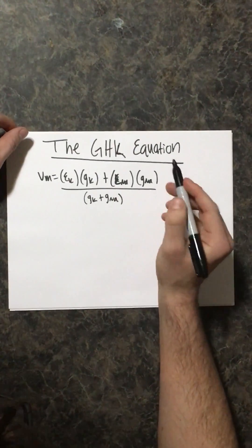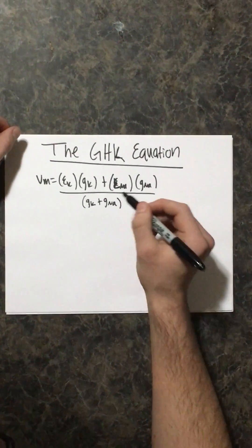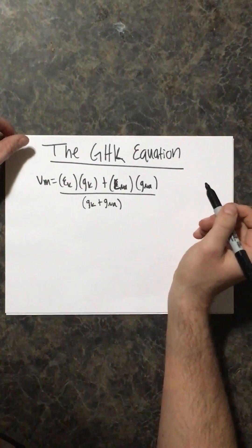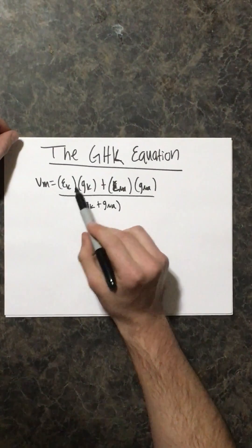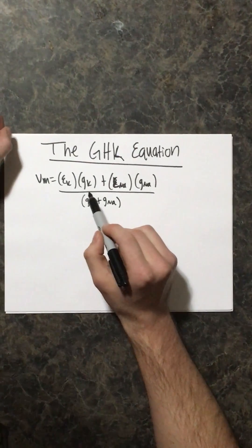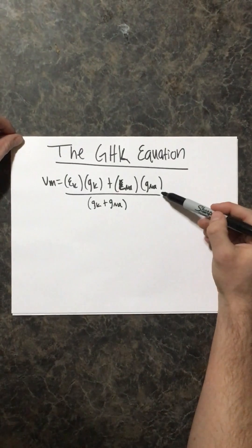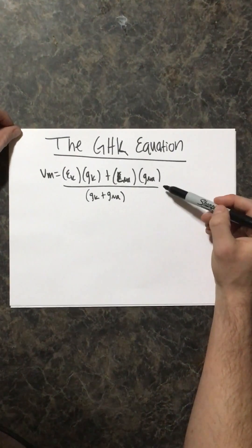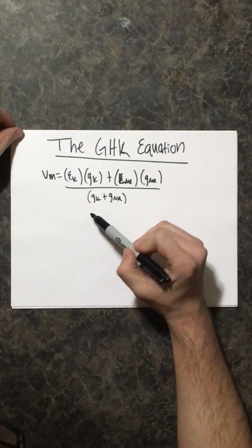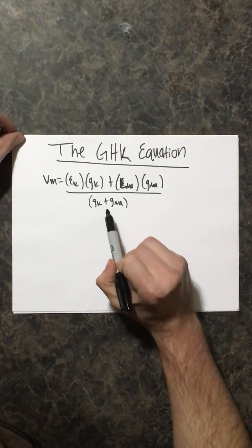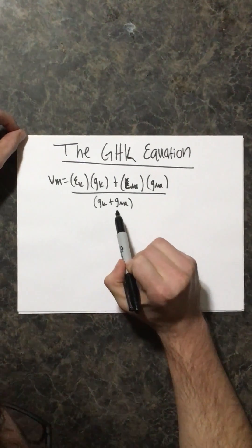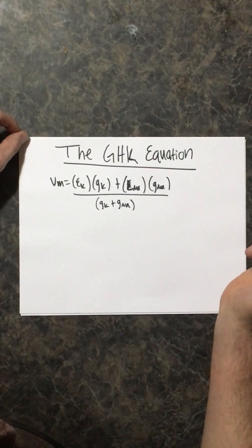And so again, like we said, not every ion is permeable to the membrane of the cell. So again, equilibrium potential of potassium multiplied by the conductance of potassium added to the equilibrium potential of sodium multiplied by the conductance of sodium. And this is all set over the conductance of sodium added to the conductance of potassium.